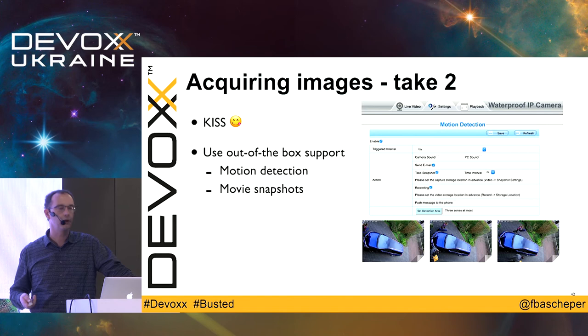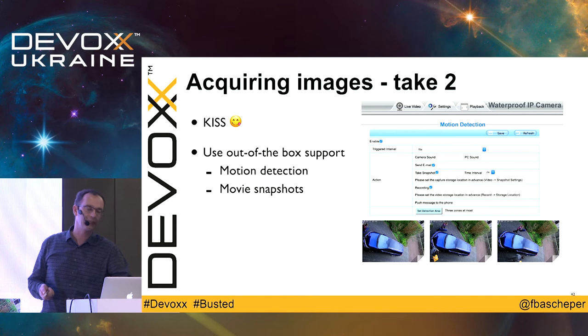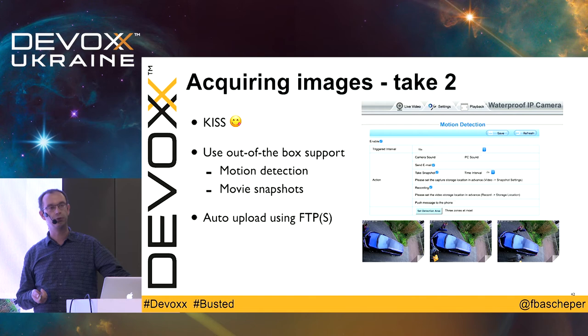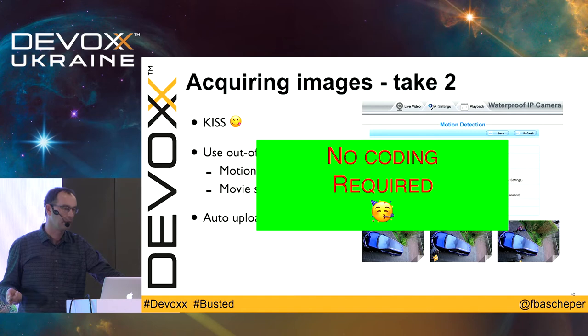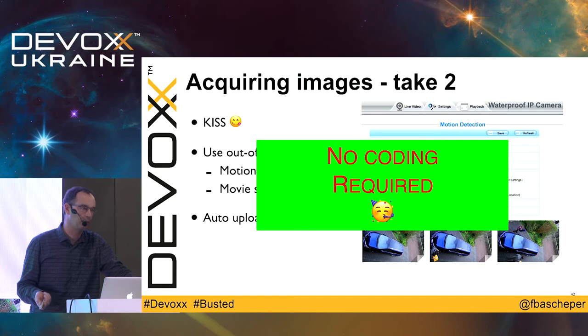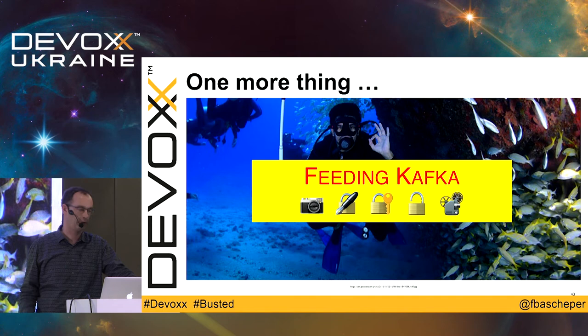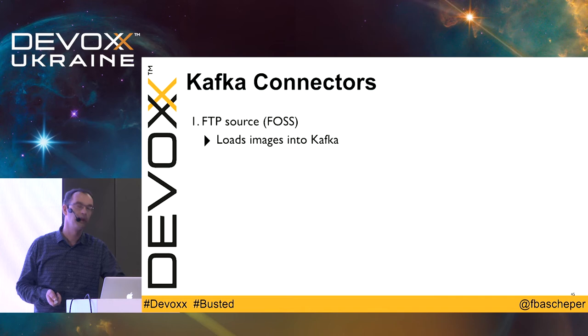So let's keep it simple and stupid. I looked at the web interface of the camera and it has out-of-the-box support for motion detection. It can upload movie snapshots and movies of about five seconds via an FTP server. No coding required — I have this NAS anyway, so I just set up an FTP server where the camera can upload the images it detects motion on. We need to feed that into Kafka, so I'm using Kafka Connect.